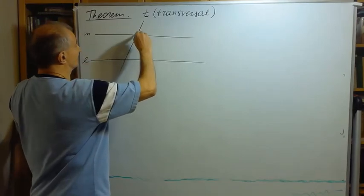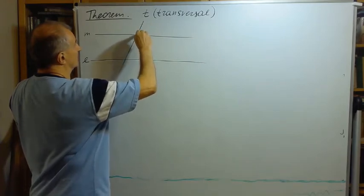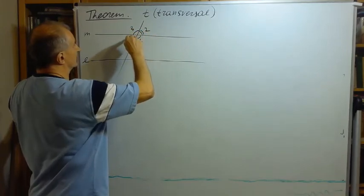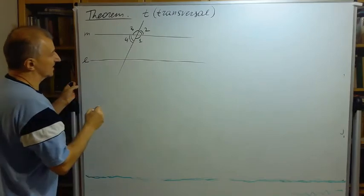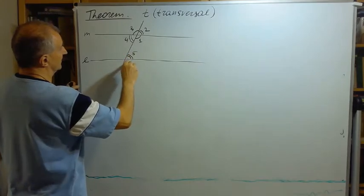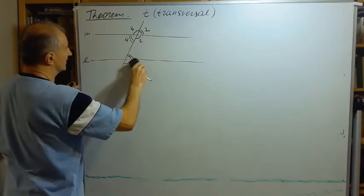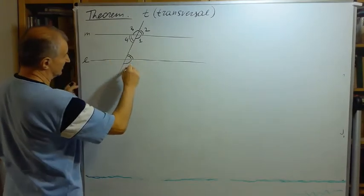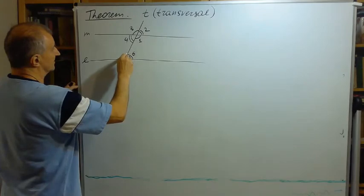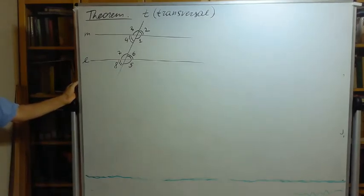I will call the angles: angle 1, angle 2, angle 3, angle 4 at one intersection, and angle 5, angle 6, angle 7, angle 8 at the other. They have special names. By the lemma we proved at the beginning of class, if angle 1 plus angle 6 equals two right angles — that is, they are supplementary — then M is parallel to L.